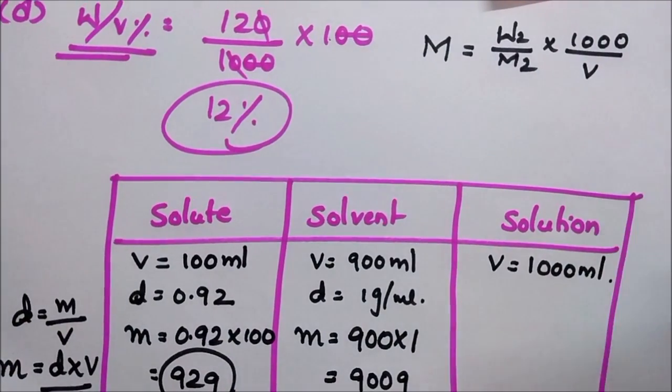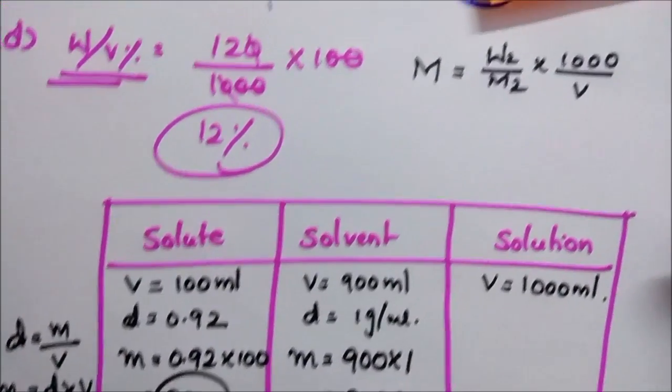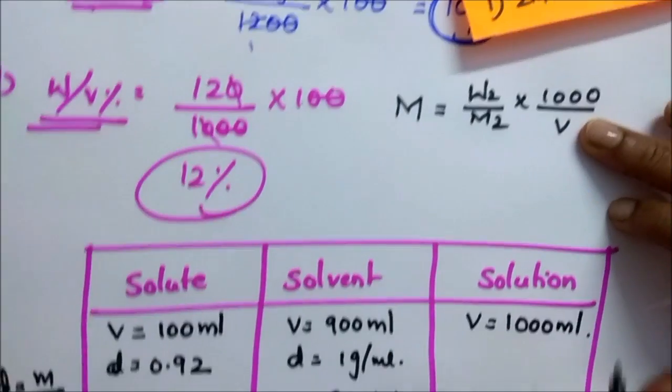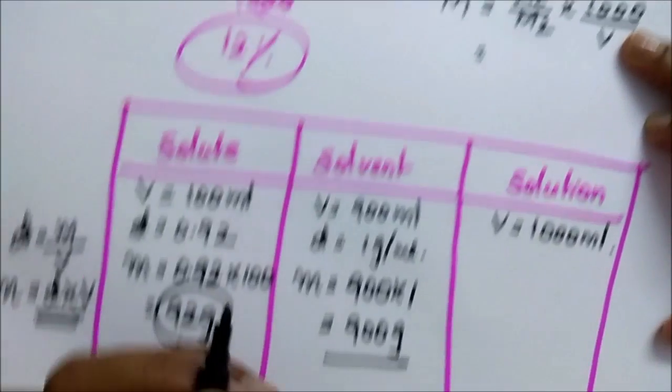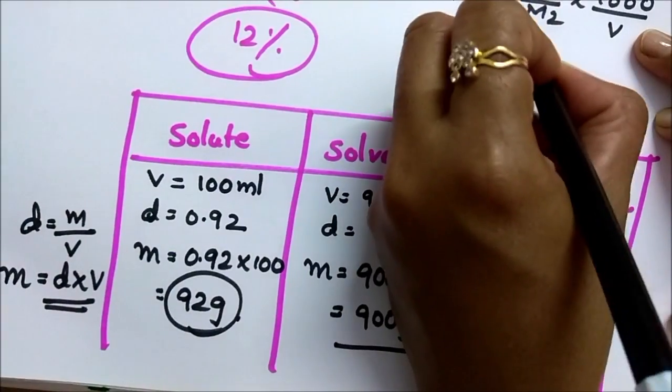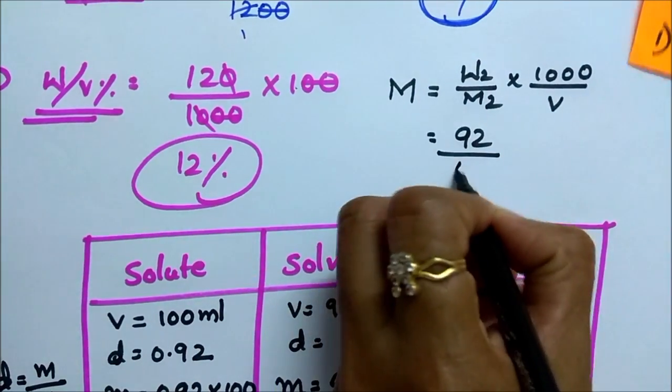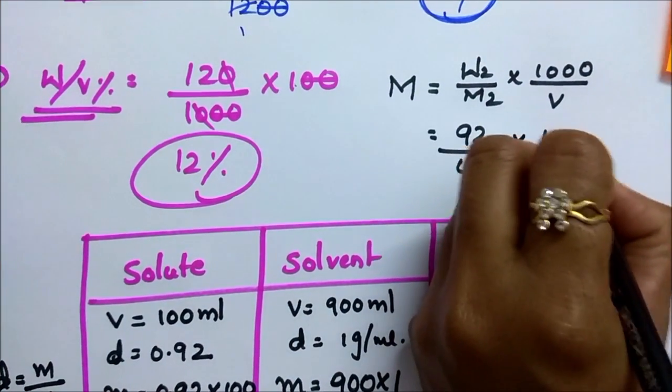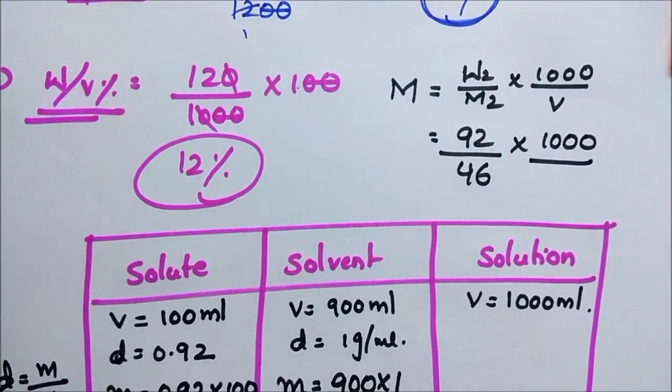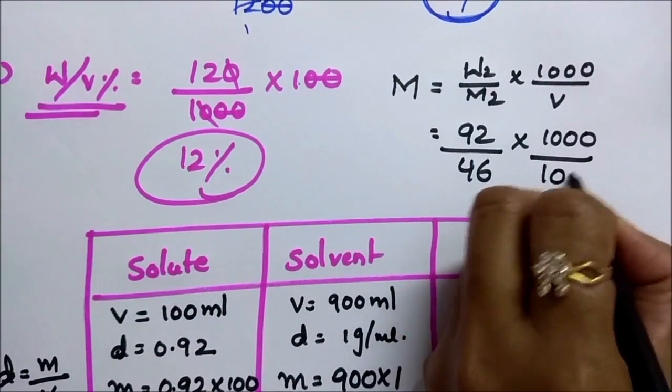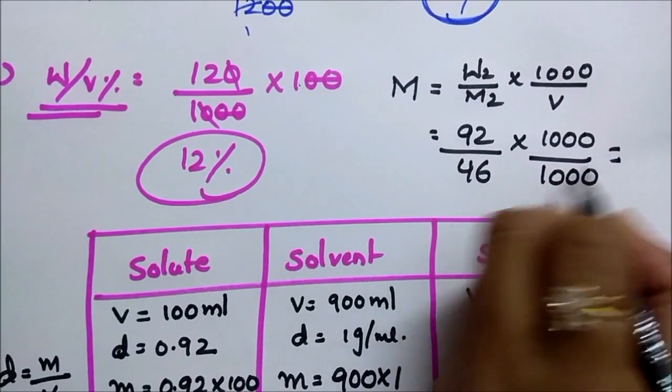Whatever the question, if you do it this way no need to learn the formulas. Weight of w2 is 92 gram, molecular weight of ethanol is 46, into 1000 by volume of solution 1000 ml. Substitute it, then you will get 2 molar is your answer, which one? Molarity.